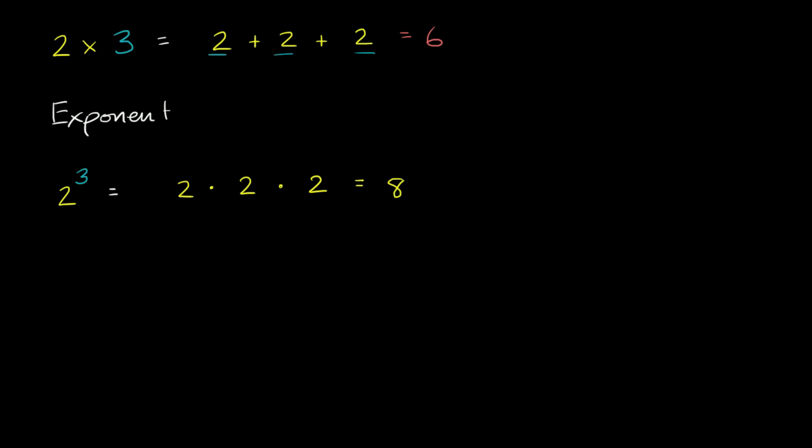What is 3 to the second power going to be equal to? I'll let you think about that for a second. I encourage you to pause the video. So let's think it through. This literally means multiplying two 3's. So let's multiply 3 times 3. This is going to be equal to 9.